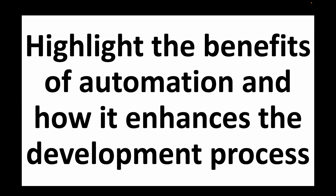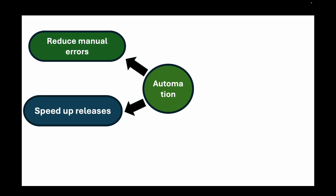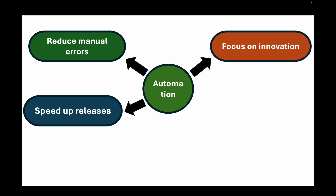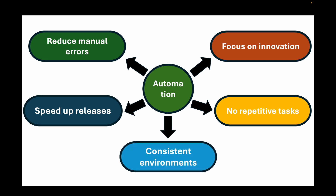Another question you can expect is: highlight the benefits of automation and how it enhances the development process. CI/CD is all about automation — it reduces manual errors, speeds up the release process, and allows teams to focus more on innovation rather than repetitive tasks. A well-defined pipeline ensures consistency across environments, right from your development environment all the way to production.